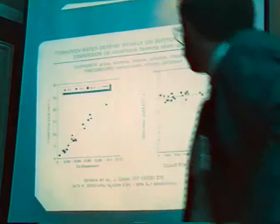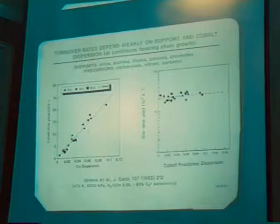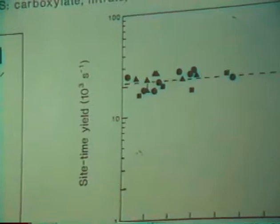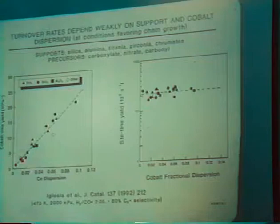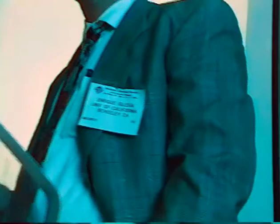If I divide the rate by the dispersion, I get a turnover rate or site time yield, and that site time yield is fairly uniform, independent of support and dispersion. This is disappointing because what you'd like to do is move off this curve as far as possible - it doesn't seem we can. The alternative is to move onto another curve by finding one component that gives you another line at a higher activity. The usual fallback is to pick a second metal component and try to introduce it to get chemical promotion, structural promotion, or what we call site protection.